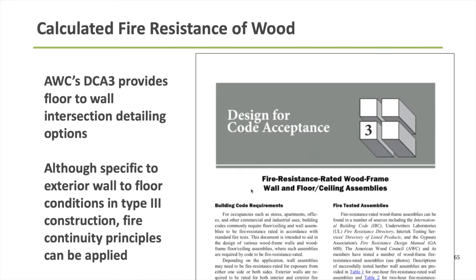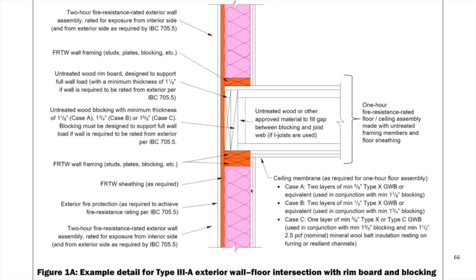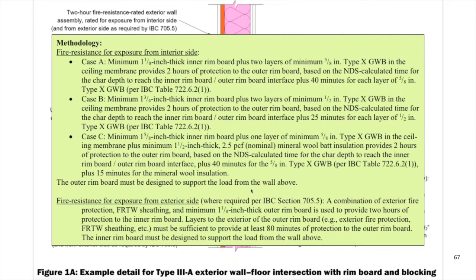Another helpful document is Design for Code Acceptance 3, or DCA 3, from the American Wood Council, available for free on their website. It provides some of these floor-to-wall intersection details. It's specifically written looking at exterior wall-to-floor intersections in Type 3 construction, but the rationale and details for fire resistance rating continuity through the floor depth also apply to shaft enclosure walls. Not only are the details in here really nice, but the narrative walking step by step through the code path for justifying that it meets the intent of the code can be very beneficial.